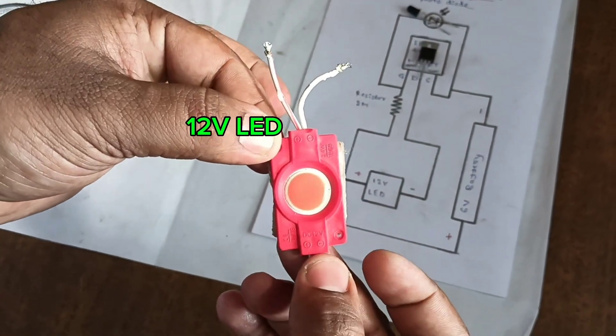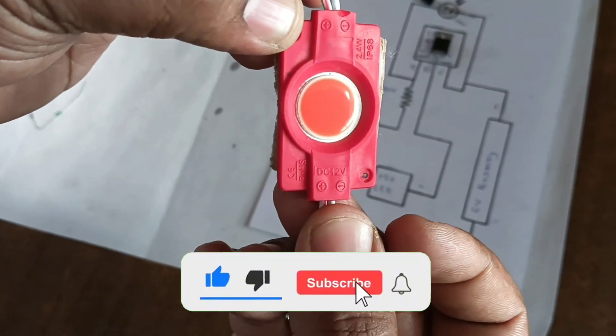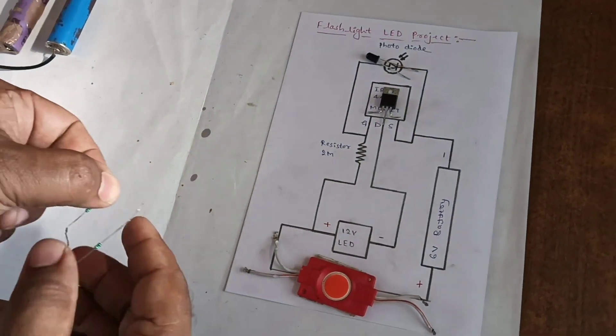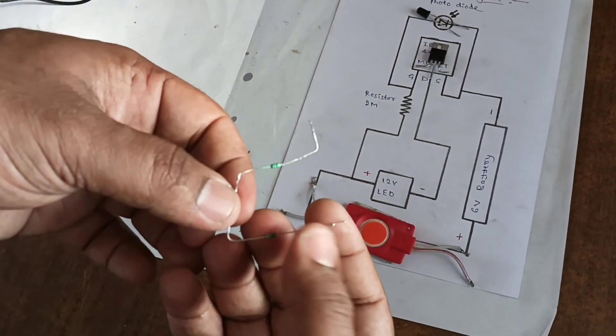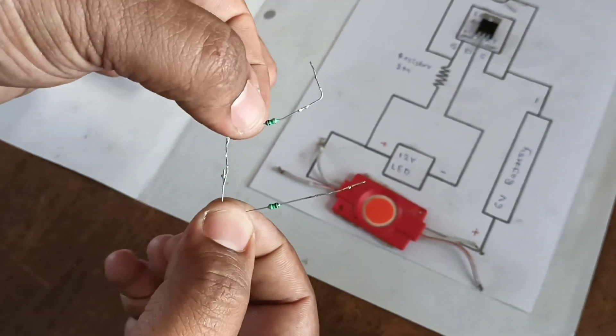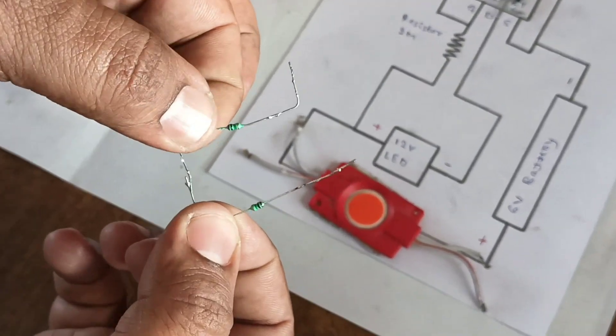See here this is the 12 volt LED. Next we have taken resistor of 2 mega ohm. One resistor is 1 mega ohm, we have taken two resistors and connected in series to make 2 mega ohm resistor.